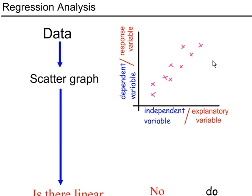Your independent variable goes on the horizontal axis. Your dependent variable goes on the vertical axis. Alternative names for these are explanatory variable and response variable.